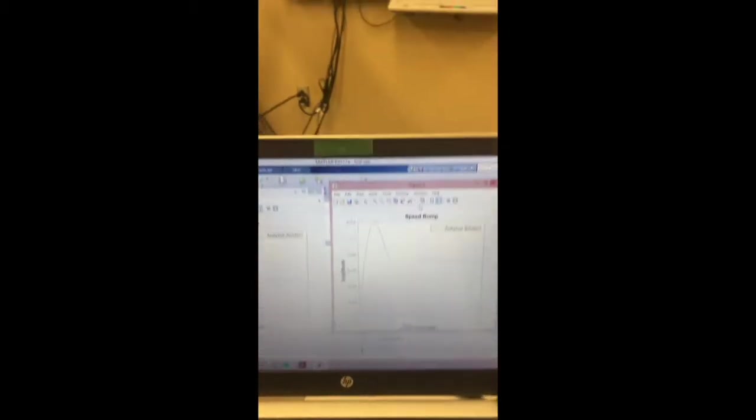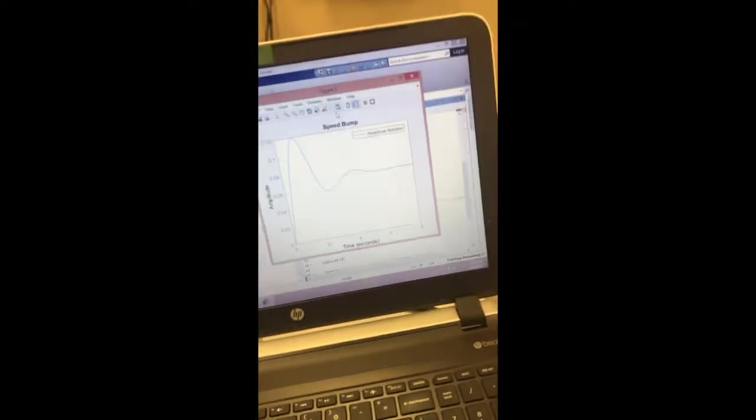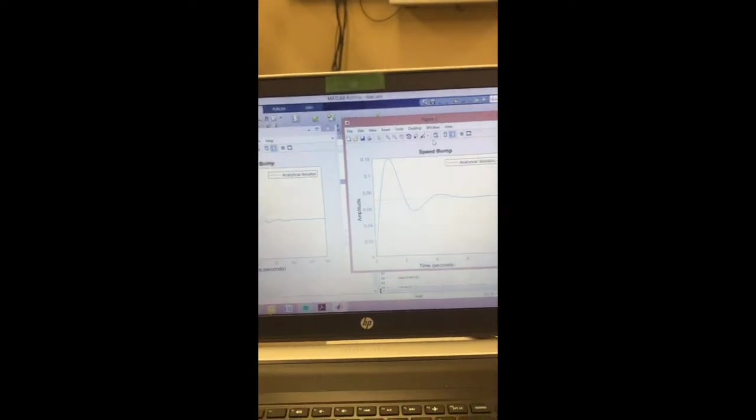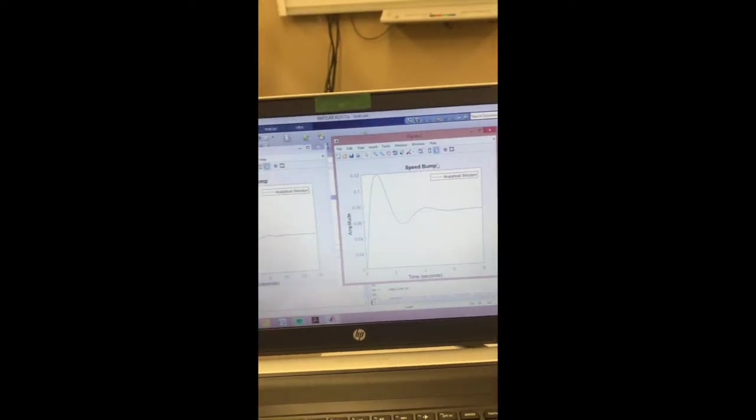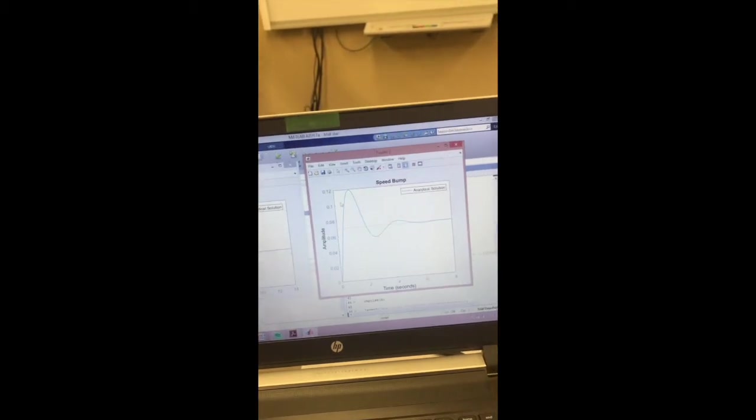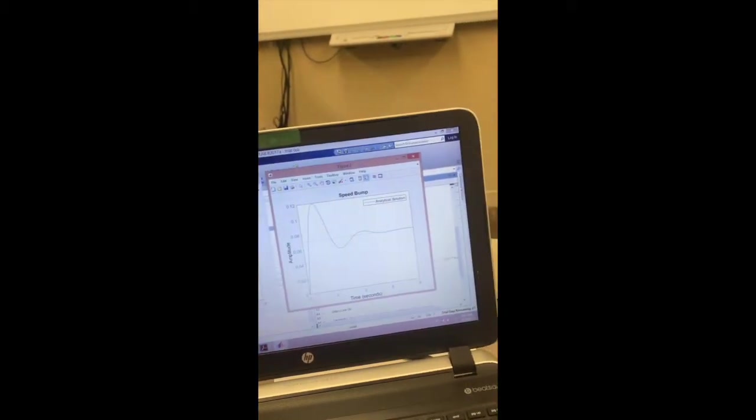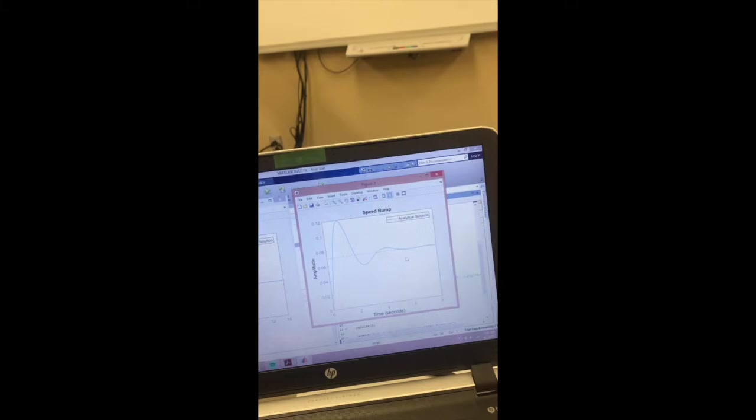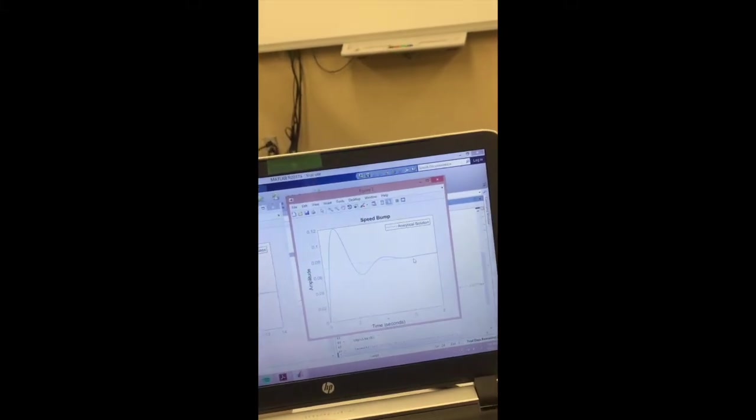These are two different plots for two different velocities in MATLAB. The one to my right is for 1 meter per second. You can see the amplitude is 0.12, and the time it takes to reach steady state is around 6 to 7 seconds.